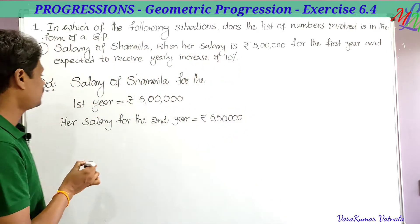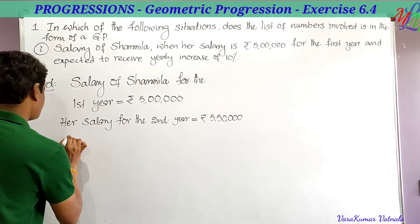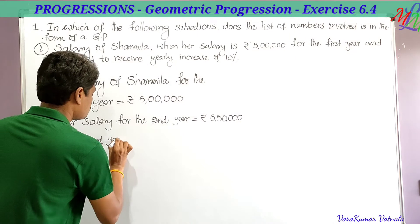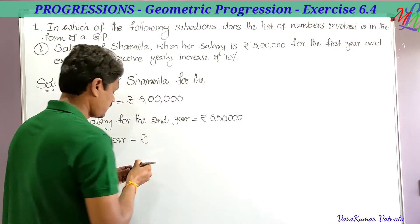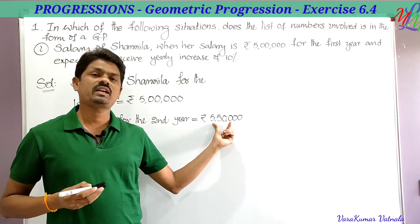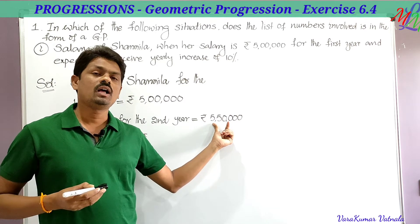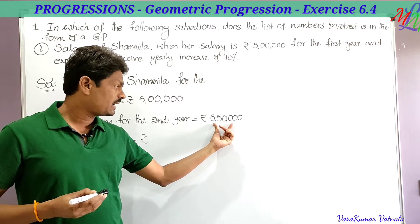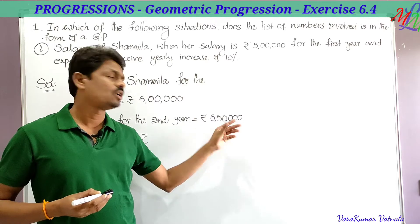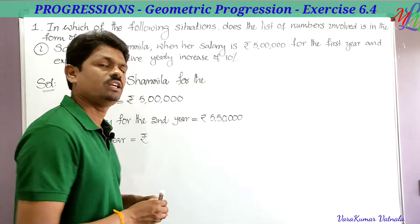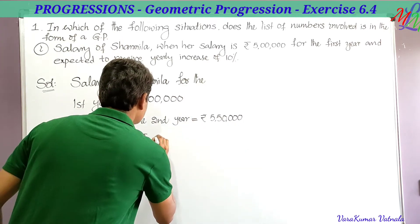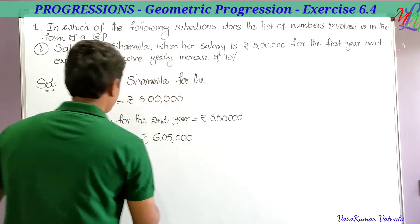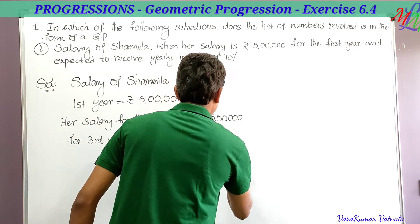For the third year, again a 10 percent increment is added to 5 lakh 50,000. 10 percent of 5 lakh 50,000 is 55,000. So 5 lakh 50,000 plus 55,000 equals 6 lakh 5,000, and so on.